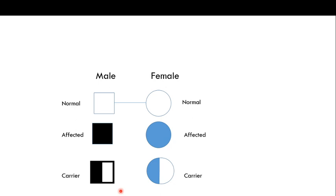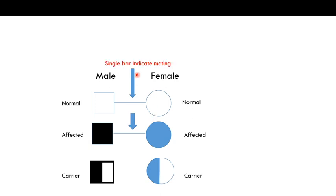There are also signs for relationships. If a male and female are mating or married, this is represented by a single horizontal line between them — regardless of whether they are normal, affected, or carriers. This single line indicates mating, and you can expect offspring from this couple.